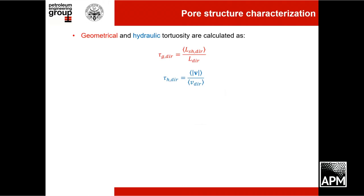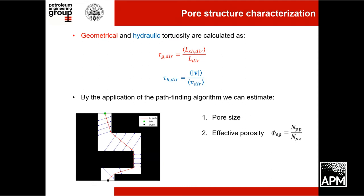Now that we know how to calculate the geometrical and hydraulic paths, we calculate the geometrical tortuosity as the average length of the shortest path divided by the length in the flow direction. By application of the pathfinding algorithm, we can also estimate the pore size as the distance from the path to the wall, and calculate the effective porosity as the ratio between the number of cells belonging to the pore channels crossed by a pathway and the total number of cells in the image.